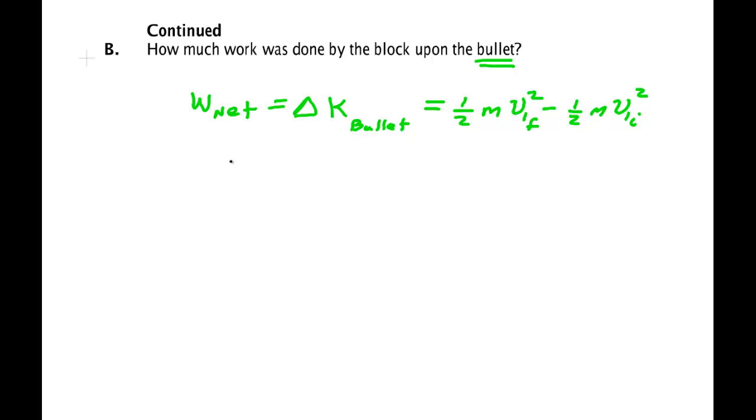So W net is one-half the mass, and the bullet was 2.4 grams, which is 2.4 times 10 to the minus 3 kilograms. Then the final speed was 100 meters per second squared, and then you subtract. We found the other speed was 73,517 meters per second, we square that.